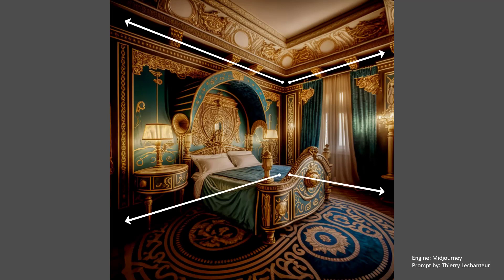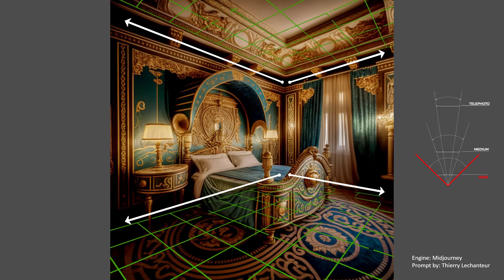From the perspective lines we can understand that the focal length chosen for this image is a medium-low focal length. Considering that the camera target points toward the corner of the room, this choice is correct because it allows enhancing the framed space, making it much more three-dimensional.